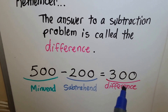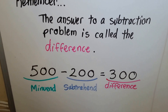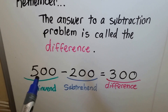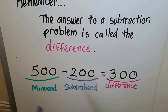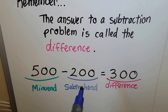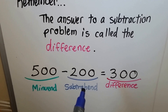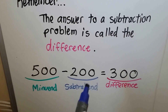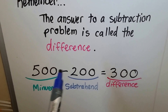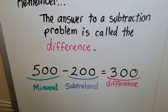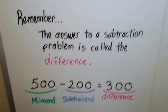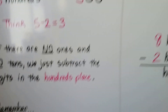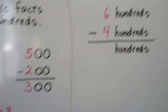The answer to a subtraction problem is called the difference. The first number is the minuend and the second number is the subtrahend. We take the subtrahend from the minuend.